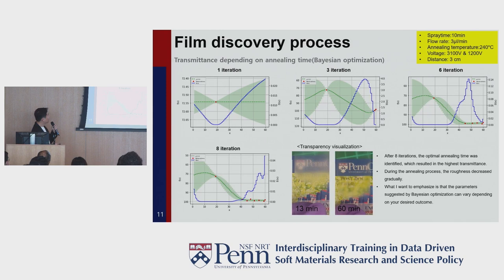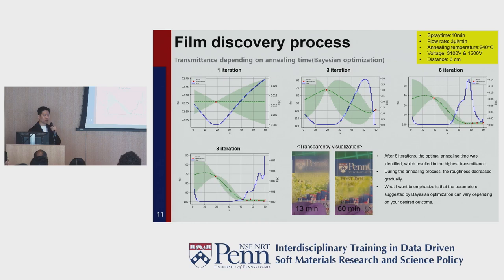The next result is the semi-autonomous experimentation for transmittance. After 8 iterations, the optimal annealing time was identified, as shown in this graph. What I want to emphasize is that the parameters suggested by Bayesian optimization can vary depending on your desired outcome.